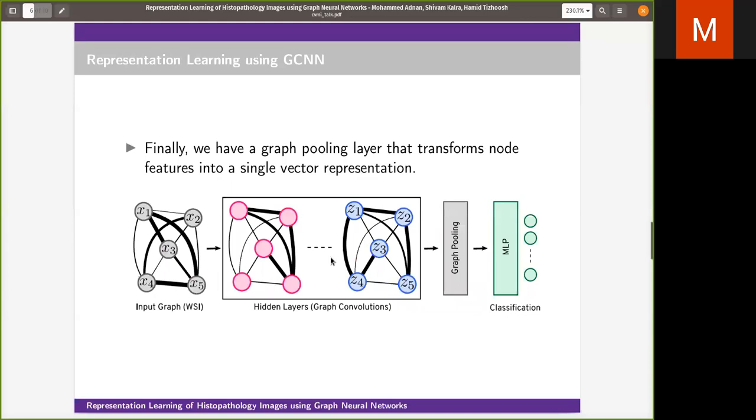Once we obtain a graph representation of WSI, it can be fed into graph convolutional networks. Graph convolutional networks were recently introduced to learn representation for graph data. We fed graph representation WSI into multiple layers of graph convolutional networks, where the feature vector for each node is transformed into different feature space.